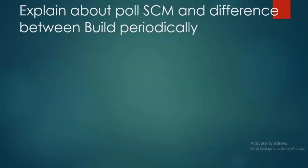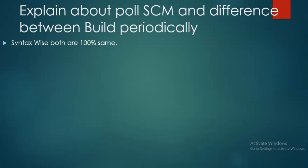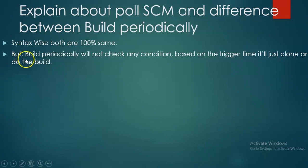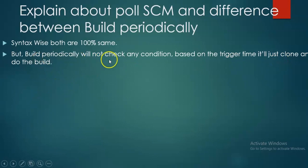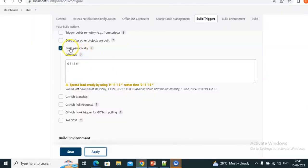What is the main difference between Poll SCM and Build Periodically? Syntax-wise both are 100% the same — the same five stars, the same representation. But in Build Periodically, what happens is it will not check any condition. Based on the trigger time, it will clone and do the build without checking any condition.